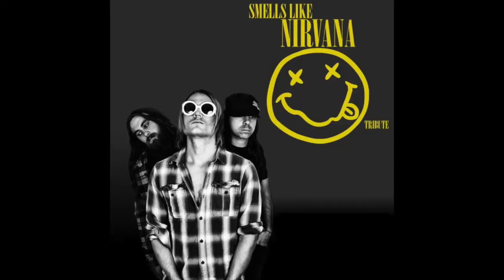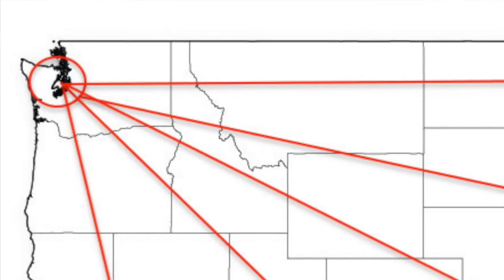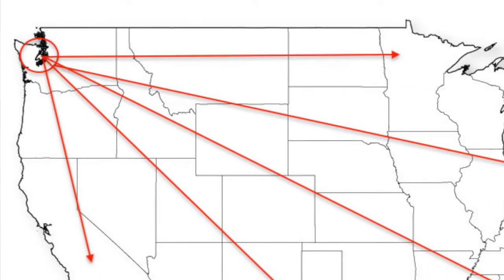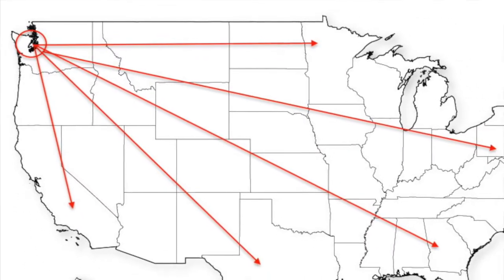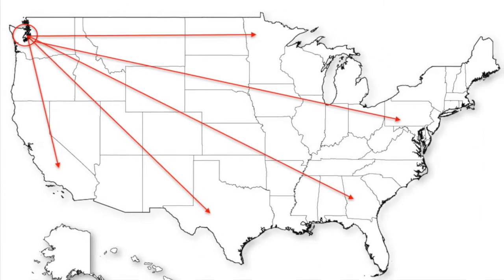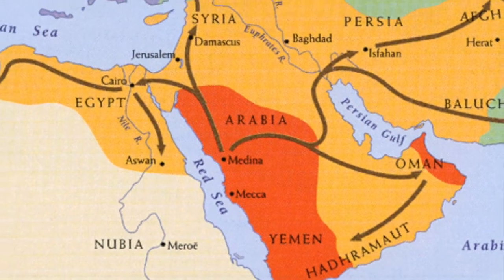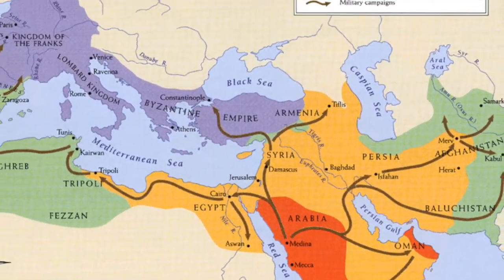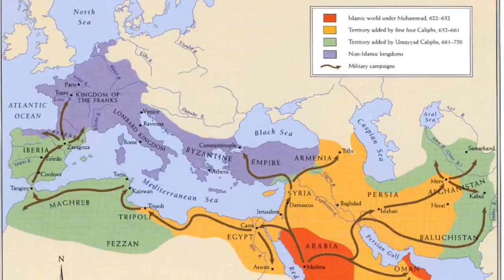A perfect example of contagious diffusion is grunge music. Grunge music started in the late 80s in Seattle, became very popular in the early 90s, and spread contagiously from Seattle through North America to the East Coast. Another example is Islam, which started in Saudi Arabia and contagiously spread east towards India and west towards Europe.